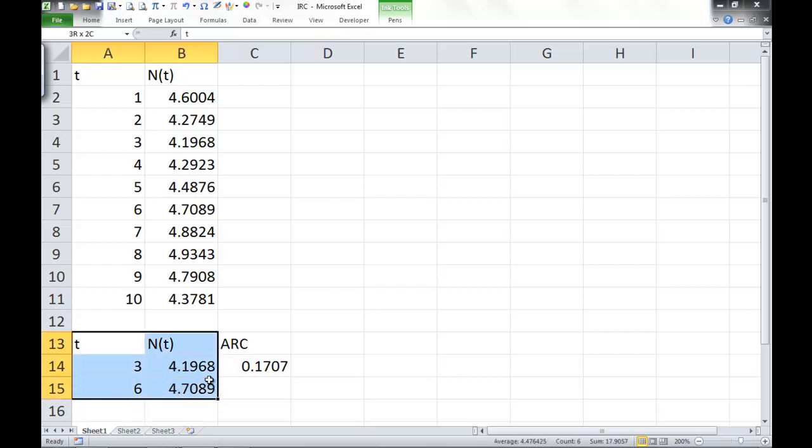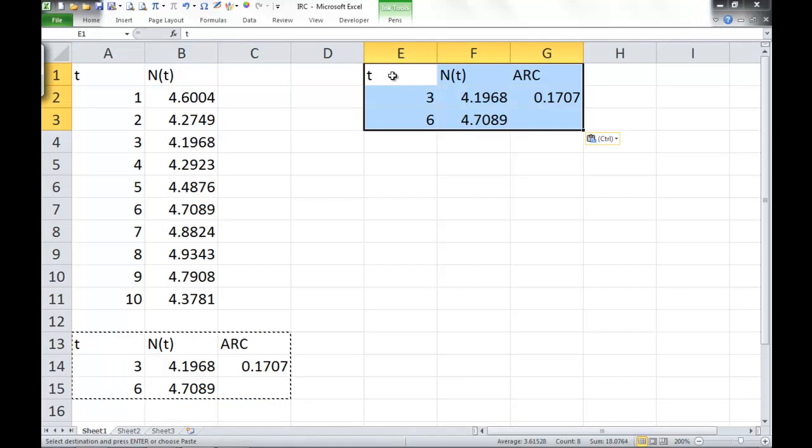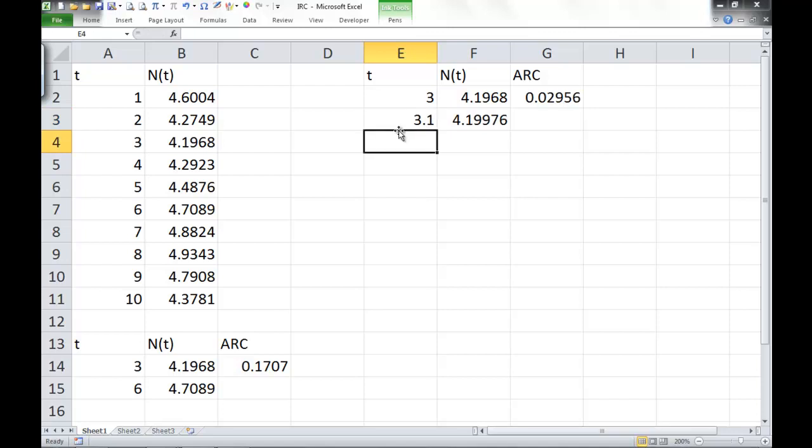Let's try and look at instantaneous rate of change. And again, we'll copy the little table that we just made, and we're going to go up and start in column E. The very top first row, I'm going to paste that new table at the top. So everything's the same, but instead of 3 to 6, let's go from t equals 3 to 3.1. So this is only for basically one-tenth of a year. The average rate of change is 0.02956.